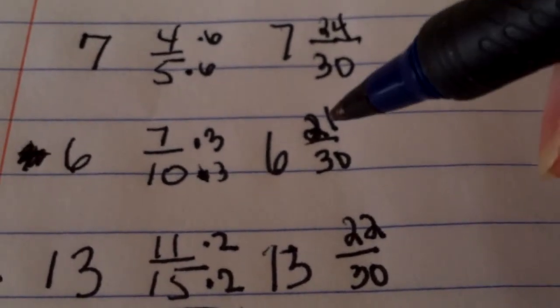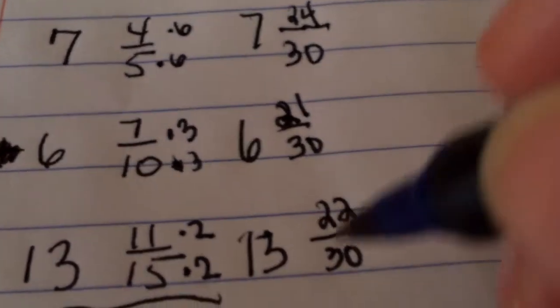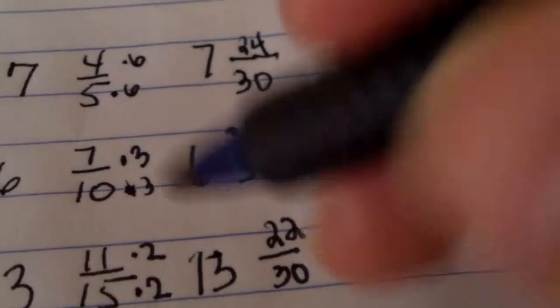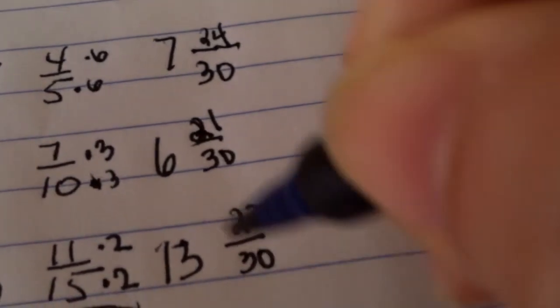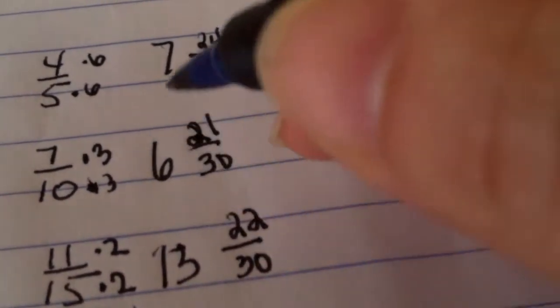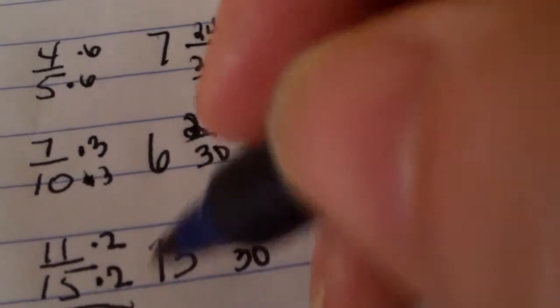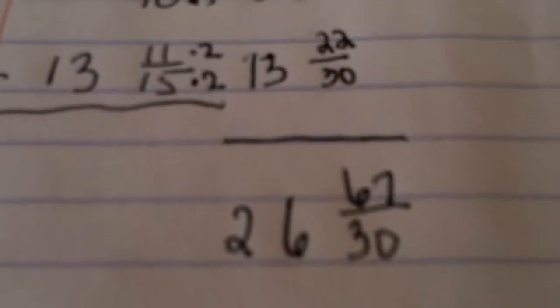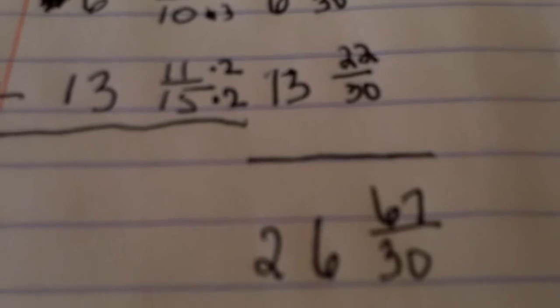We got 4, 5, 6, 7. Talk to yourself as you do that addition there. And that would be, if I did that right, hard to talk and compute at the same time, but it looks like 26 and then 67 thirtieths.